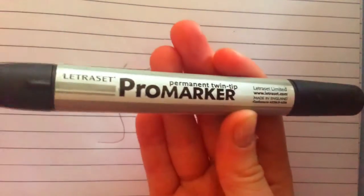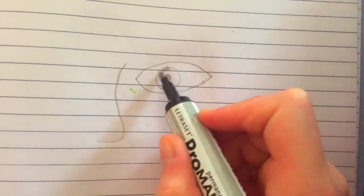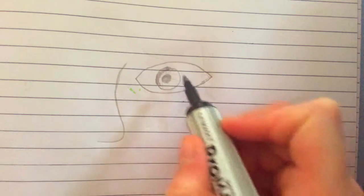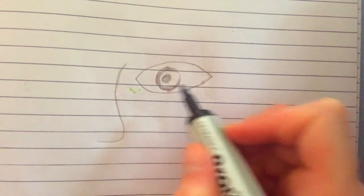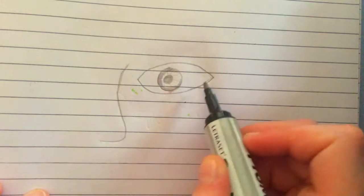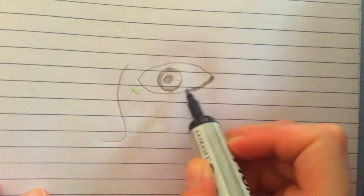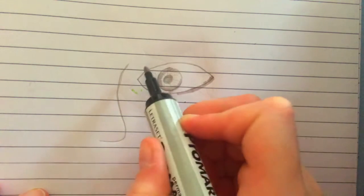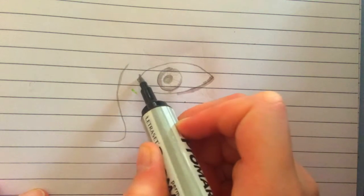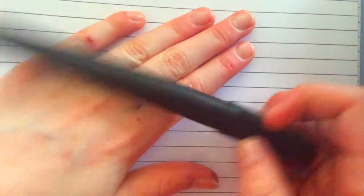Now I will be using the Pro Marker. You want to use the thin end, just go in there exactly like that, and a little bit right here and maybe some just there and there.